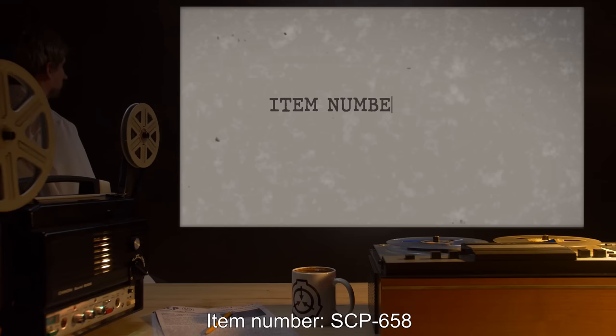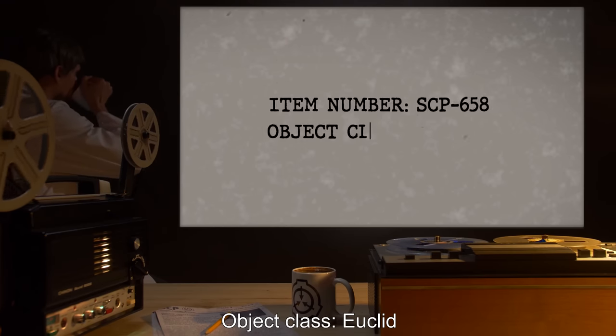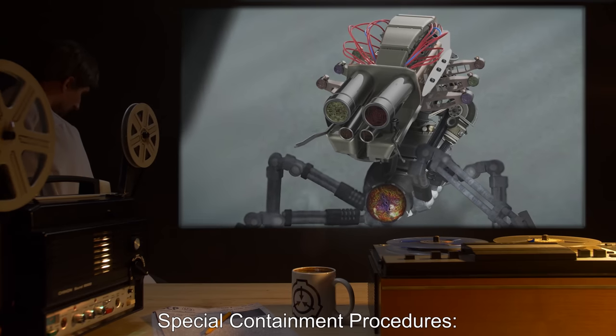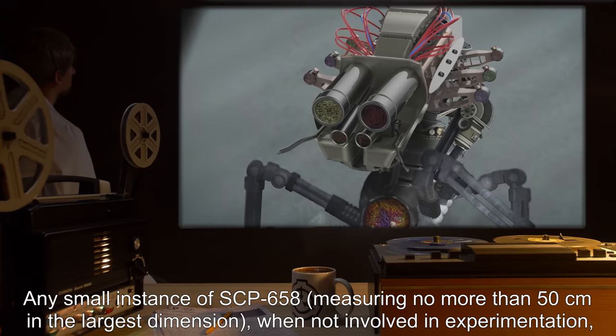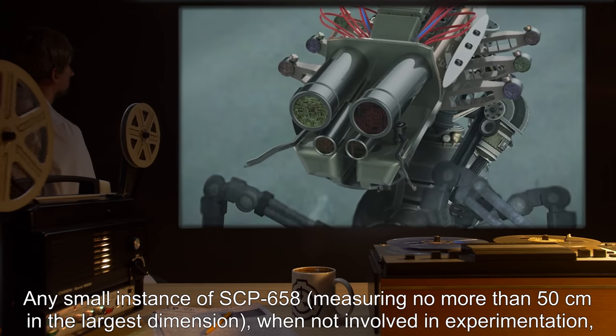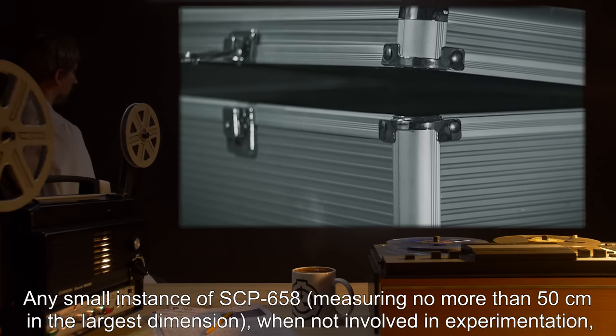Item Number SCP-658, Object Class Euclid. Special Containment Procedures: Any small instance of SCP-658, measuring no more than 50 centimeters in the largest dimension, when not involved in experimentation,